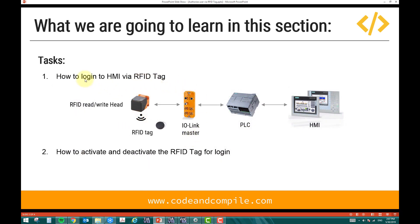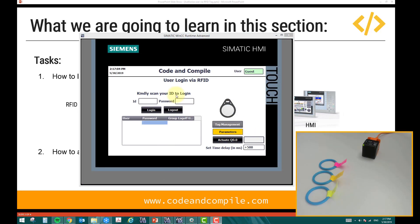Task one is how to log into the HMI via RFID tag — I simply bring my tag near the RFID head module and it logs into the HMI. In this example, on the top of the screen we see the logged-in user shown as 'guest'. We have a user login section, a login/logout button, a user ID and password table, tag management parameters, actual output, and a setting for delay time. Currently no user is logged in; 'guest' is the default.